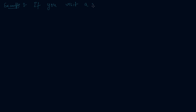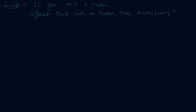For example, if you visit a garden, you will find different plants there such as grasses, trees, flowers, and flower-bearing plants like roses and jasmine. All these living organisms interact with each other.